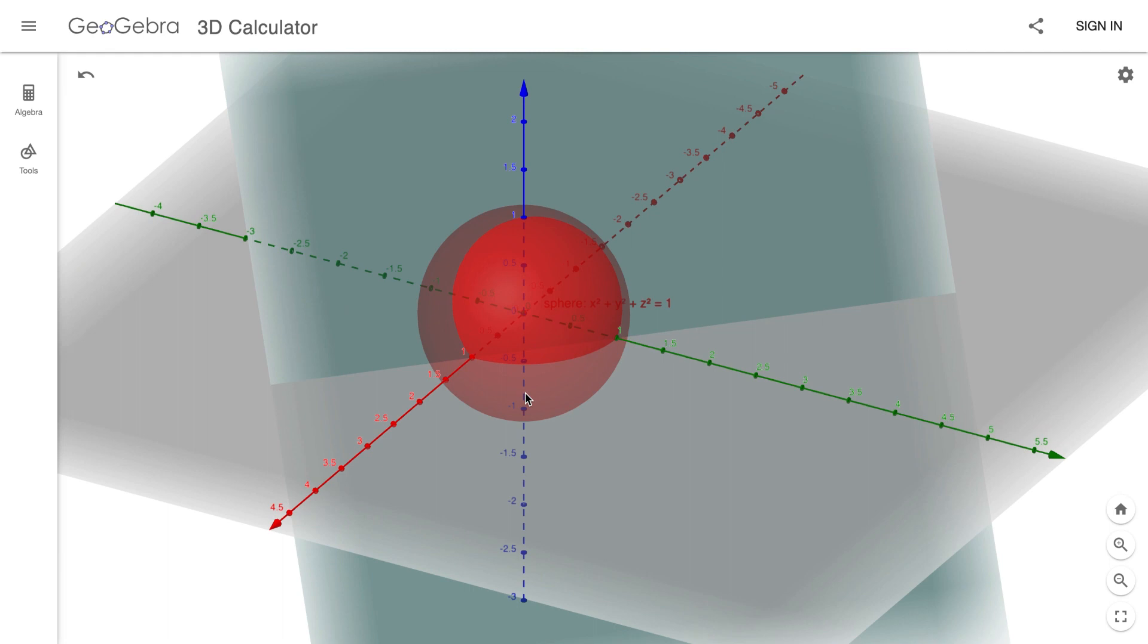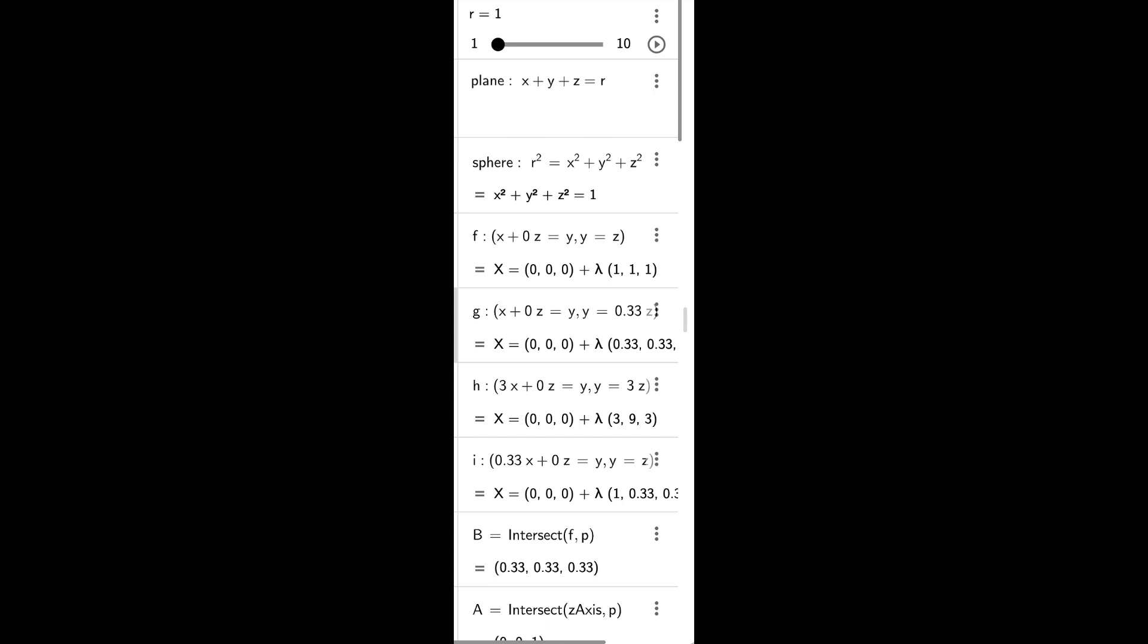For example, the plane that I'd use as a middleman before projecting the points outward apparently could be represented with a very satisfying function: x plus y plus z equals r, r being the radius of the circle. Anyway, fast forward a bunch of math.